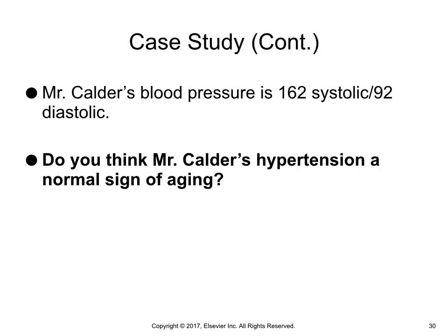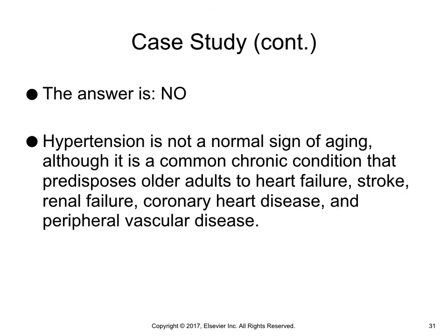Case study continued. Mr. Calder's blood pressure is 162 over 92. Do you think Mr. Calder's hypertension is a normal sign of aging? The answer is no. Hypertension is not a normal sign of aging, although it is a common chronic condition that predisposes older adults to heart failure, stroke, renal failure, coronary heart disease, and peripheral vascular disease.